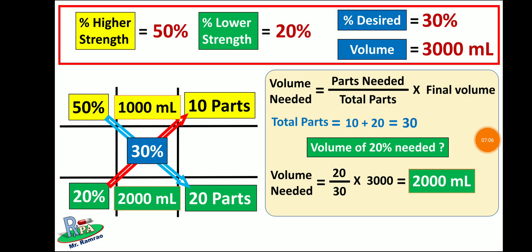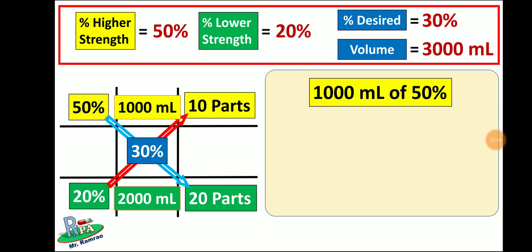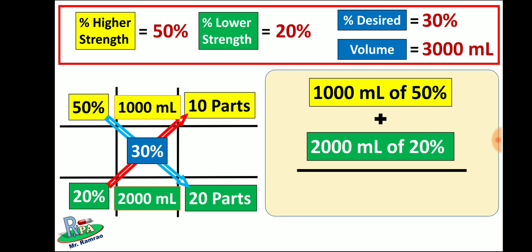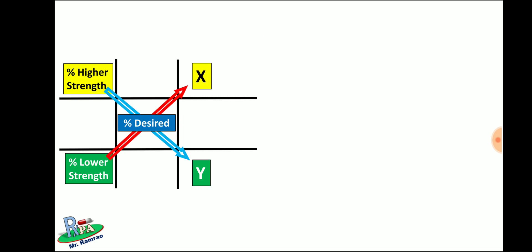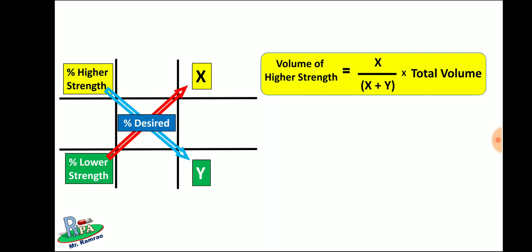The volume of 20% can also be calculated directly by subtracting the volume of 50% from the total volume: 3000 ml minus 1000 ml also gives 2000 ml. In conclusion, 1000 ml of 50% plus 2000 ml of 20% will give 3000 ml of 30% dextrose solution. You can also use the direct formulas: volume of higher strength = x/(x+y) × total volume, and volume of lower strength = y/(x+y) × total volume.